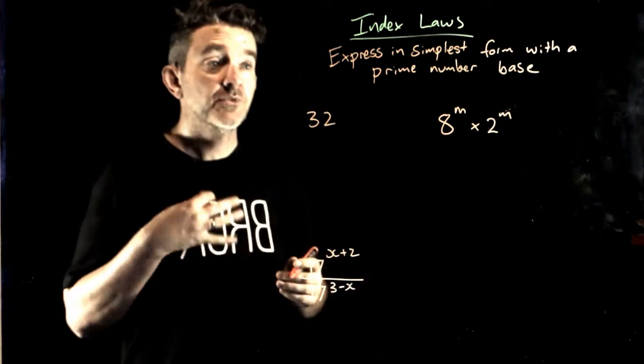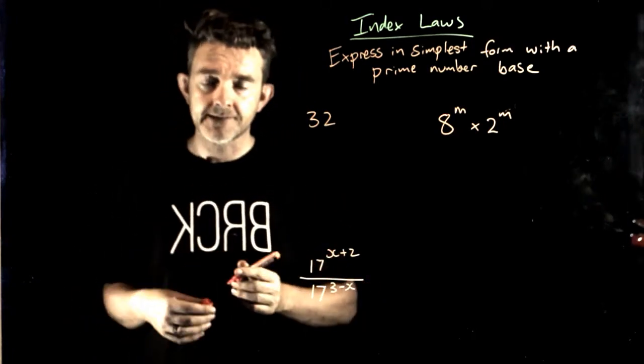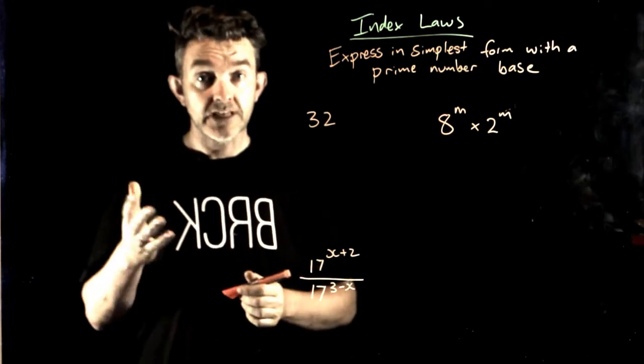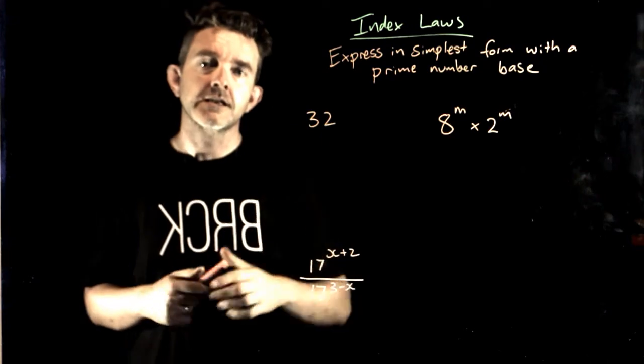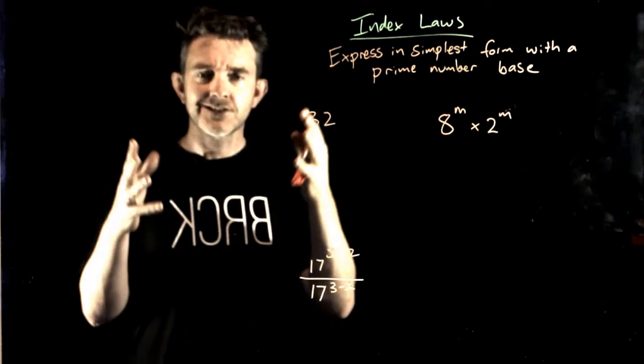Now, the next thing here is expressing in simplest form with a prime number base. So we know what a prime number is, it's a number that's only divisible by one and itself, and we know what base is, it's the bottom number in an index with an index on top of it.